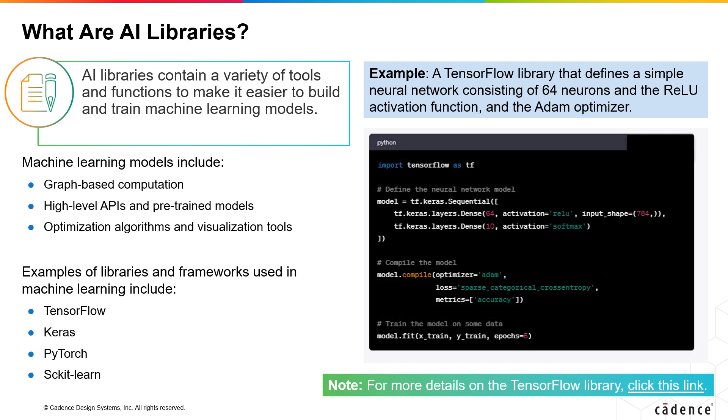Overall, TensorFlow, Keras, and PyTorch are the most popular frameworks for deep learning, while Scikit-Learn is the most popular for traditional machine learning algorithms.